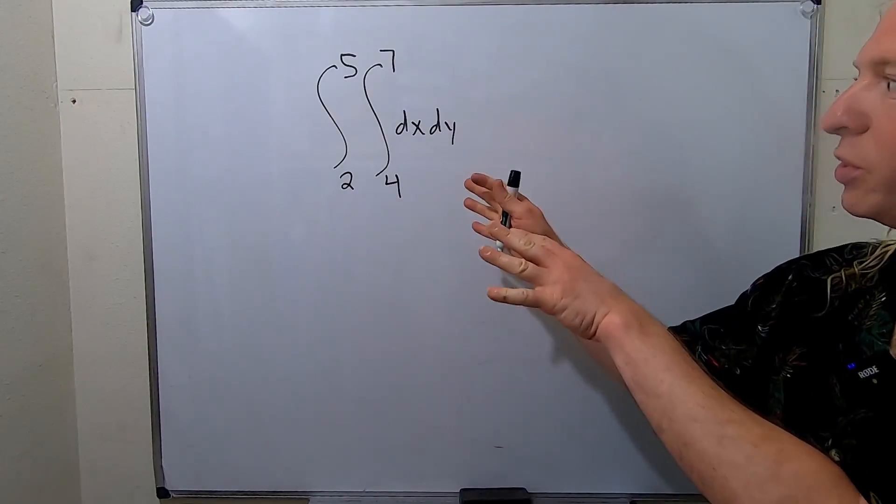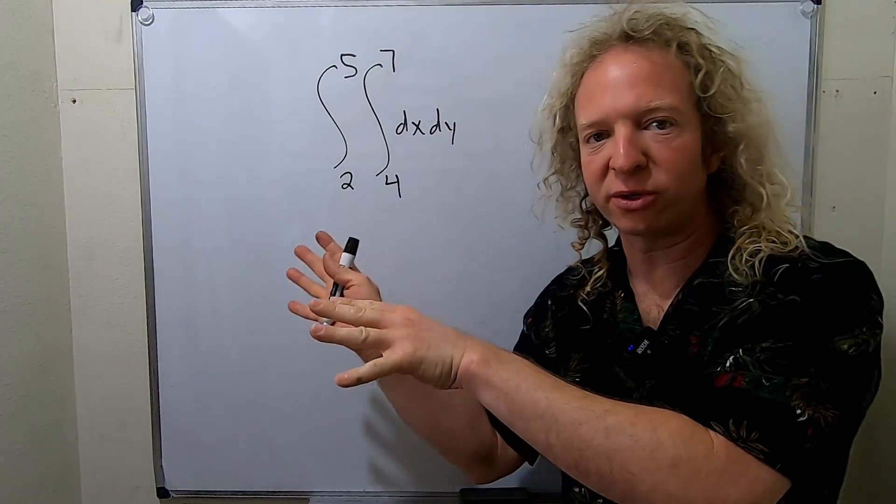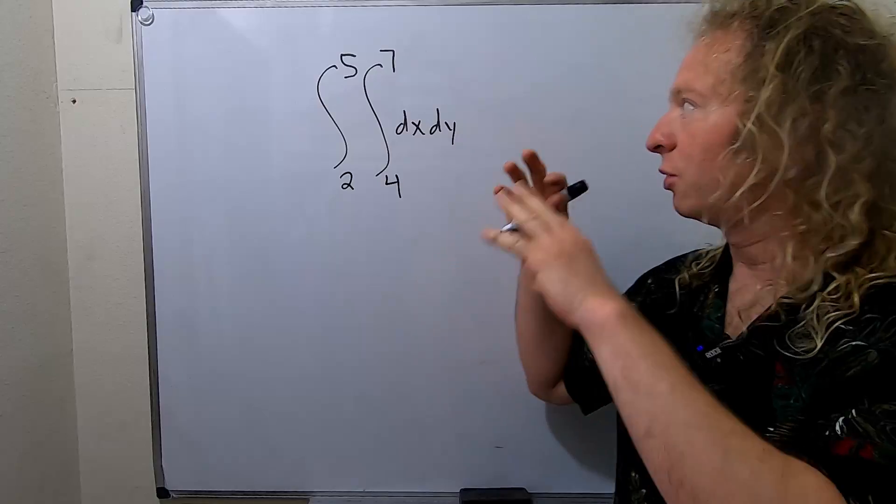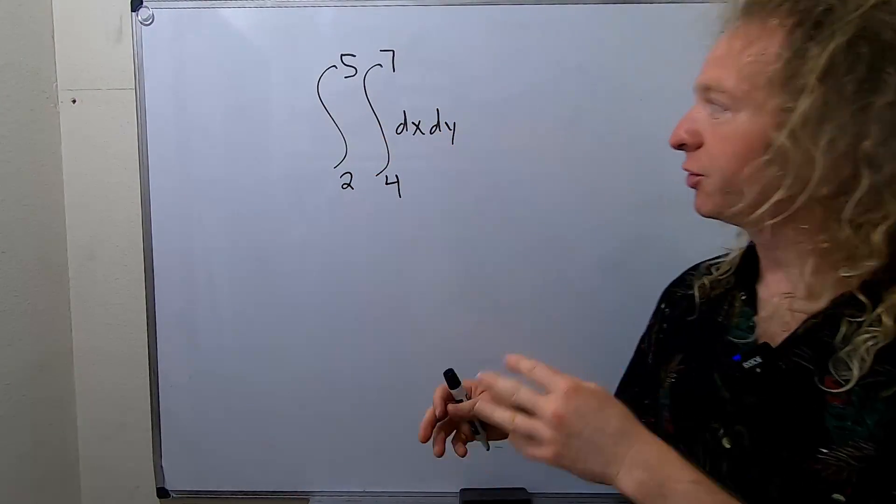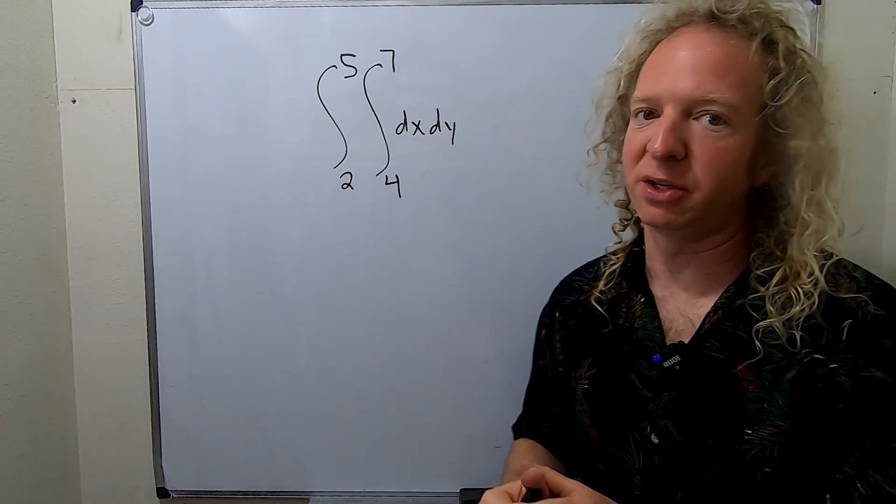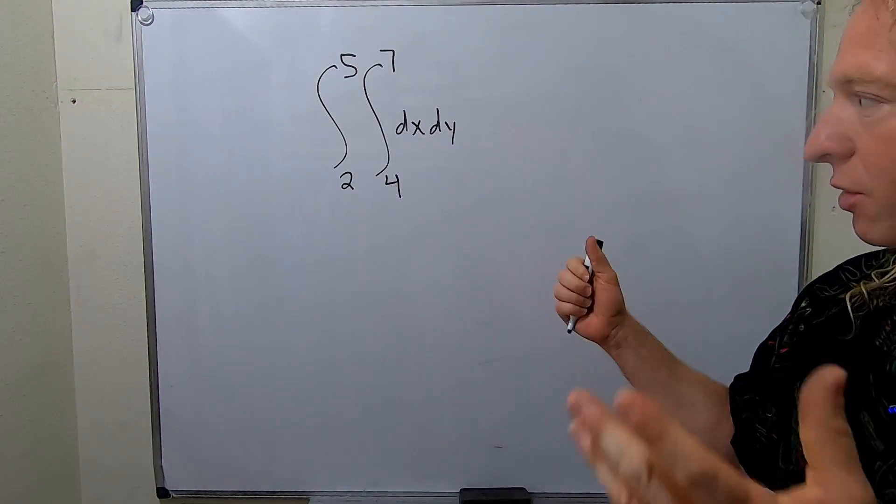In this video we're going to sketch the region given by this definite integral and we're going to write the other order of integration. We're going to switch the order of integration and we're also going to find the area that's given by this integral.